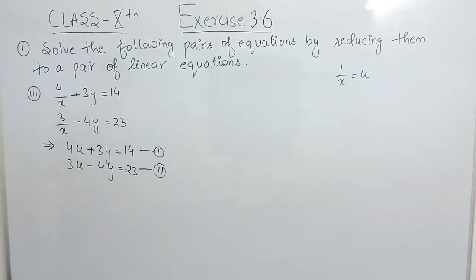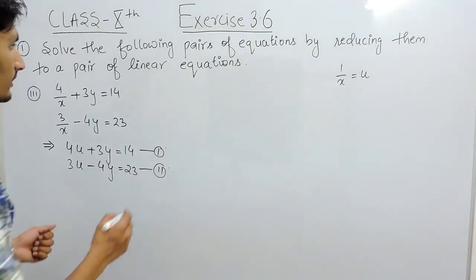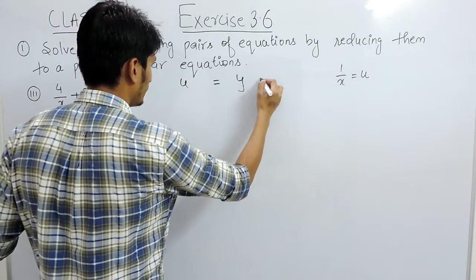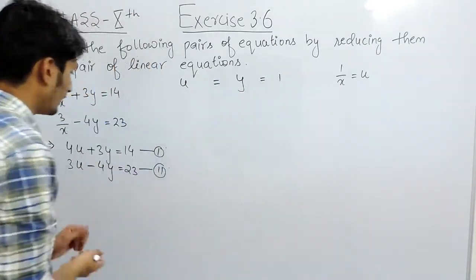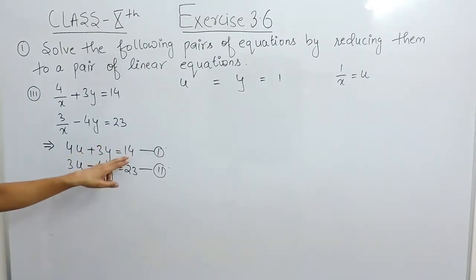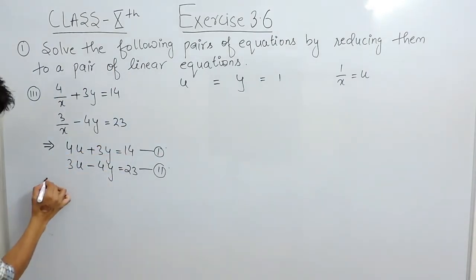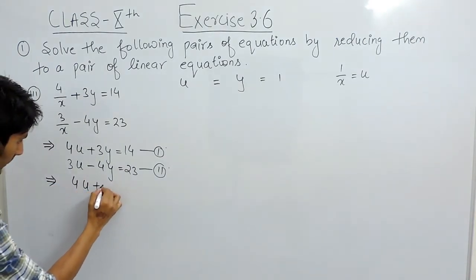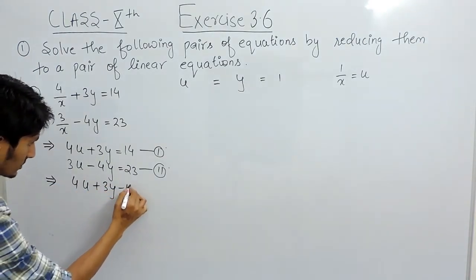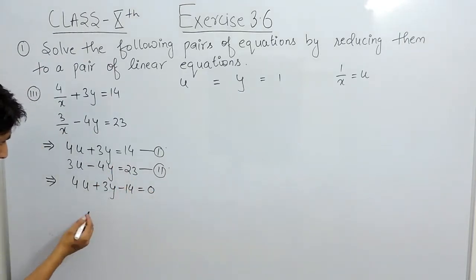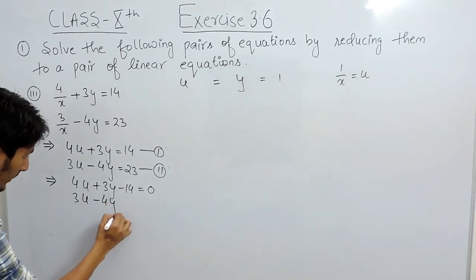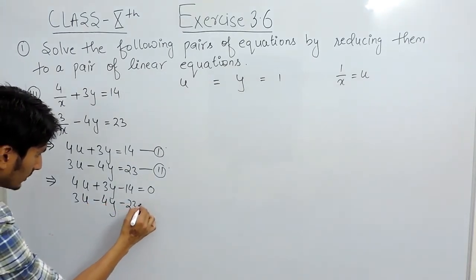Now, to solve this question I am using the cross multiplication method. You have to write u equals to y equals to 1. First of all, shift the constant to the left hand side so that our linear equation is in standard form. So this shifted to this side will become minus 14, giving 3u minus 4y minus 23 equals to 0.